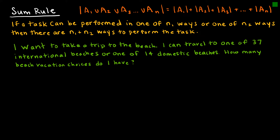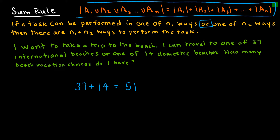The sum rule says if I have a task that can be performed in one of N1 ways or one of N2 ways — 'or' is our key word here — then there are N1 plus N2 ways to perform the task. For instance, let's say I can either travel to one of 37 international beaches or one of 14 domestic beaches. How many beach vacation choices do I have? If I can take 37 international or 14 domestic, then there are a total of 51 beach vacation choices.